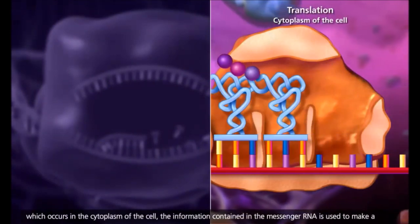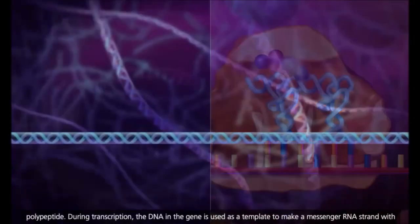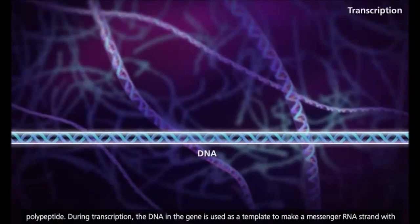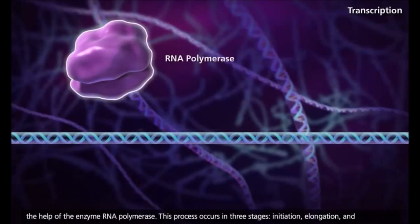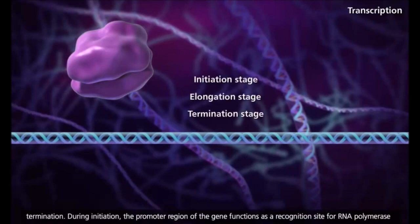During transcription, the DNA in the gene is used as a template to make a messenger RNA strand with the help of the enzyme RNA polymerase. This process occurs in three stages: initiation, elongation, and termination.